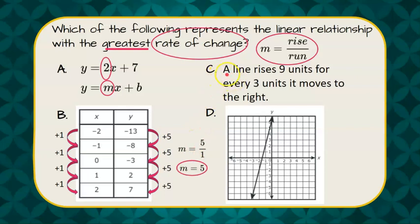In choice C we're told a line rises 9 units for every 3 units. So rise is 9 so our slope is 9 over our run of 3 and it simplifies to a slope of 3.